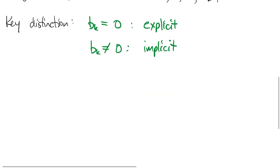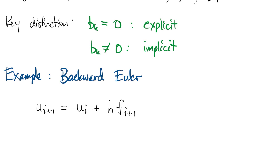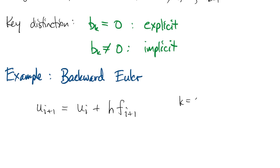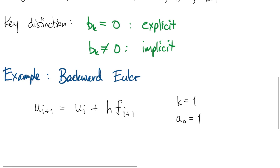This matters because ui plus 1 is actually hiding in two places in an implicit method. For example, if we look at the easiest implicit method, which is called backward Euler, it looks a lot like the Euler method, but we have an index i plus 1 instead of i on the f. This is a one-step method, and we can write out what all the constants are for it in the general formula.